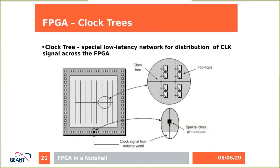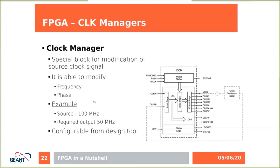The FPGA also contains a clock manager, which is a special block for modifying the source clock signal. Very typically you have a clock source on the board — let's say it generates a signal at 100 megahertz, but you want to run your design at half that frequency. A special block, called the clock manager or DCM (Digital Clock Management), modifies the clock signal. This circuit can modify the frequency and phase of the clock signal, and provides various output options such as a clock shifted by 90 degrees.